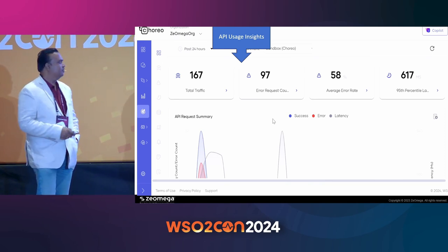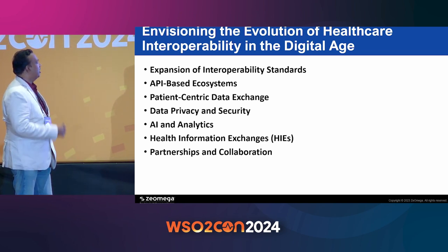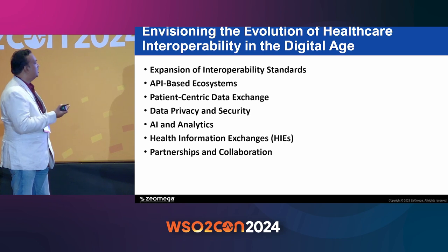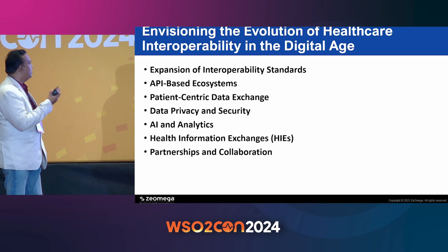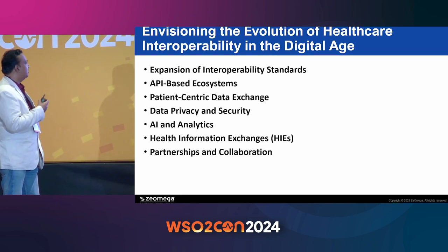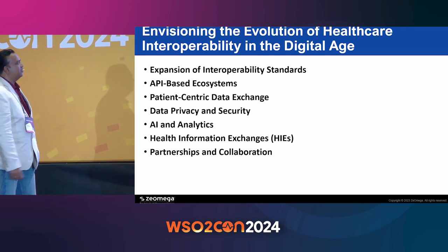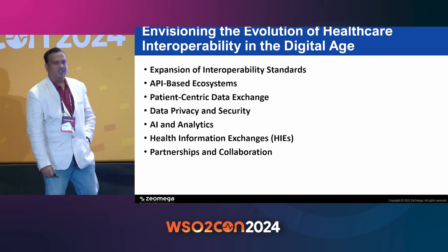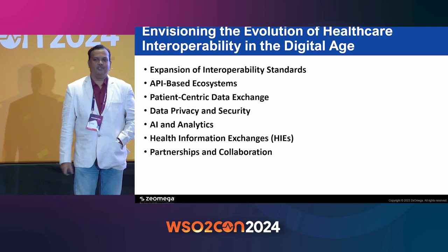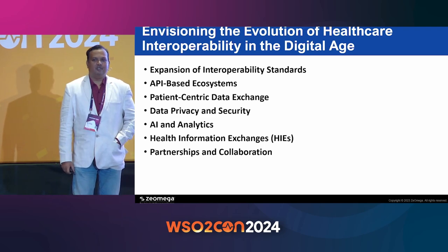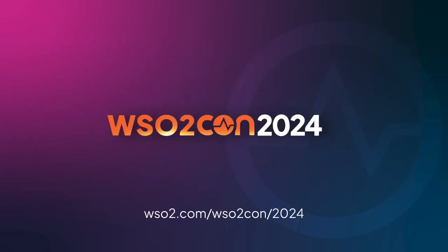So there are many advantages. In the digital age, people are adopting expansion of interoperability standards and API-based ecosystems, patient-centric data exchanges, data privacy and security, AI analytics, and HL7 FHIR is still in scope — as well as partnerships and collaborations. That's the case study we wanted to share about Choreo in healthcare data transformation. Thank you, happy to answer any questions.